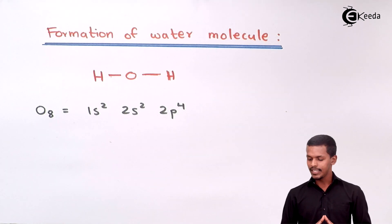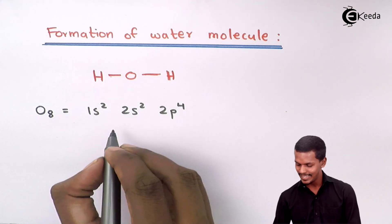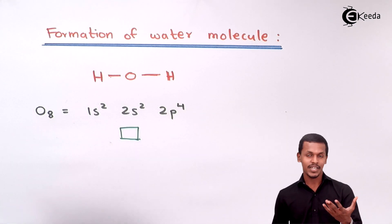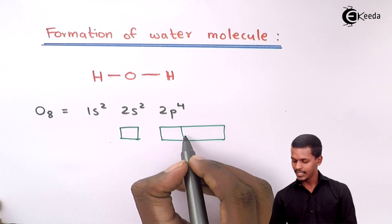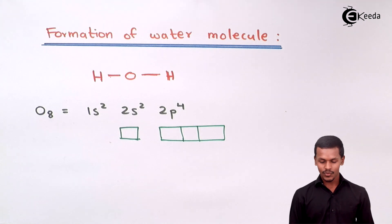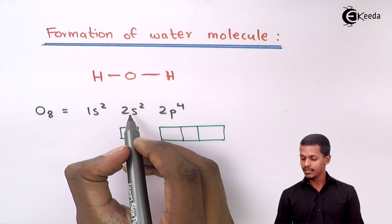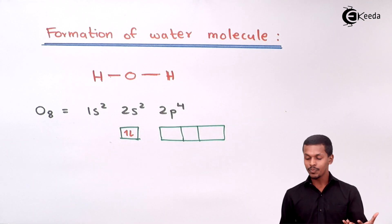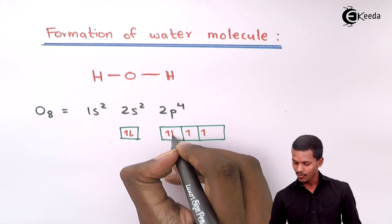This is the electronic configuration of oxygen, and we can represent the orbitals as follows. The s subshell consists of only one orbital, while the 2p subshell consists of three orbitals. Now let us fill in the electrons: the 2s subshell has 2 electrons, and the 2p subshell has 4 electrons — filled as 1, 2, 3, 4 — following Hund's rule.